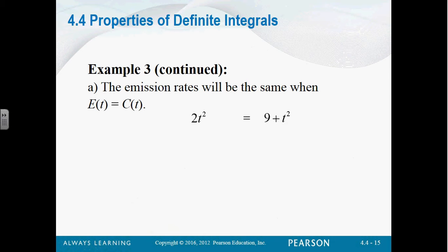Can we solve that? Sure. Subtract t squared, we get t squared equals 9. If t squared equals 9, what's t? Mathematically, it would be plus or minus 3, but since we're talking about a time, we're not going to talk about time in the past. So after three years, the emission rates will be the same.